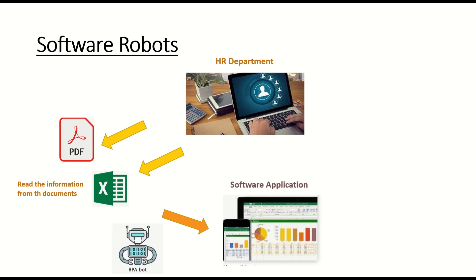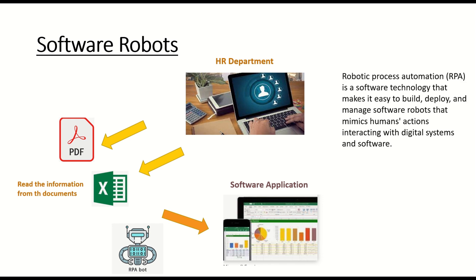Robotic Process Automation is a software technology that makes it easy to build, deploy, and manage software robots that mimic human actions interacting with digital systems and software. RPA is a pure software robot which can mimic human activities interacting with all software products end to end.